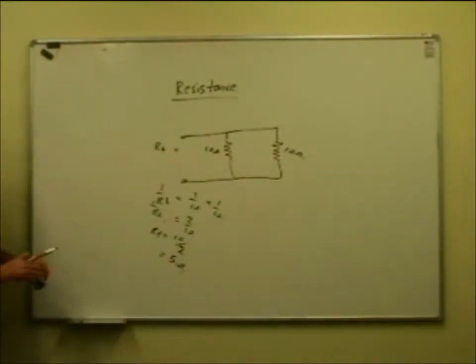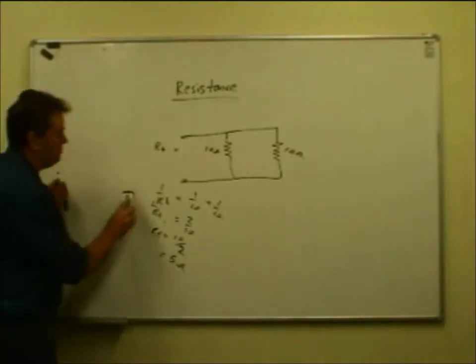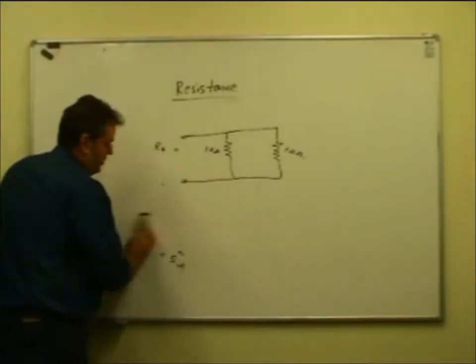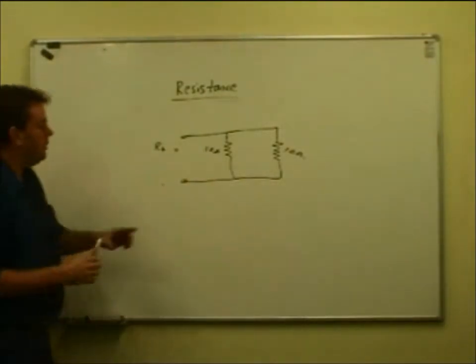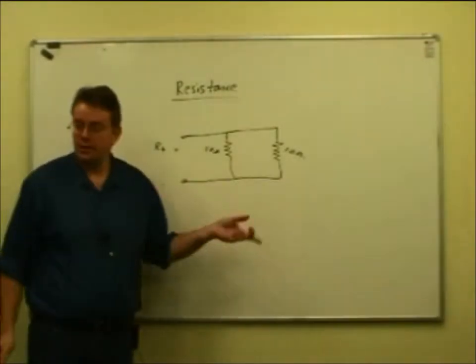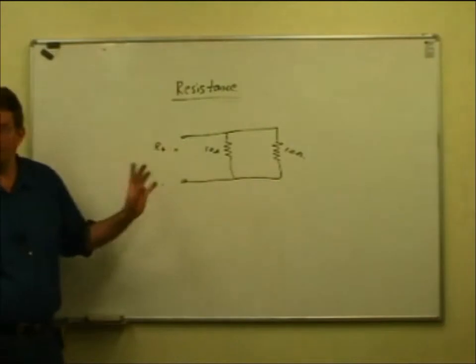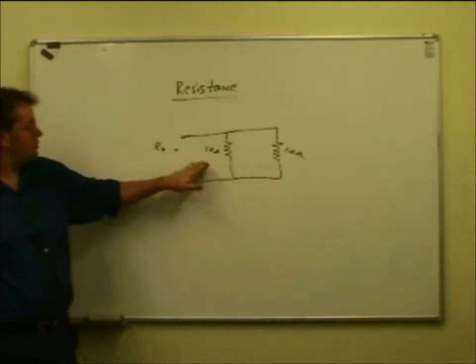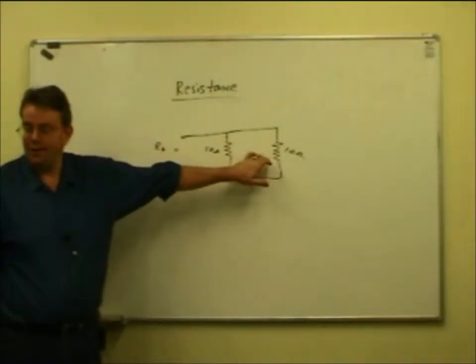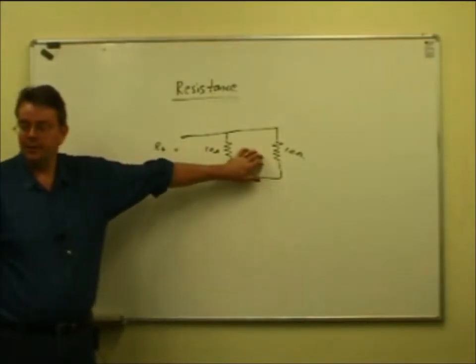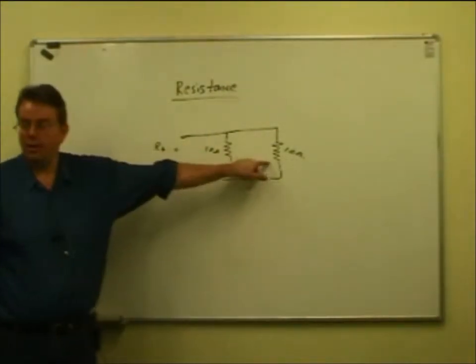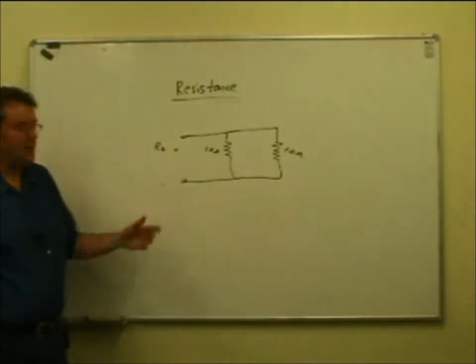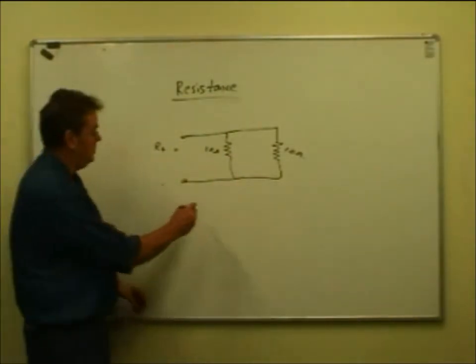So that is an important lesson. When you put two resistors in parallel that are the same resistance, the total resistance is half. So a 10 ohm and a 10 ohm in parallel, you don't have to do the maths - it's 5 ohms.